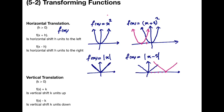The other type of translation you saw before was vertical translation. Suppose k is a positive number greater than zero. If k is added to the function f(x) — added to the whole function — then the graph of f is shifted k units upwards. If k is subtracted from f(x), then we take the graph of f and move it k units downwards.